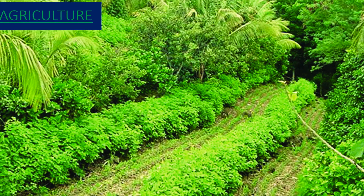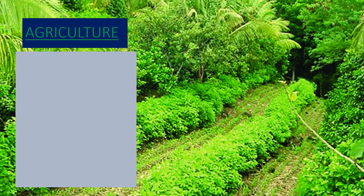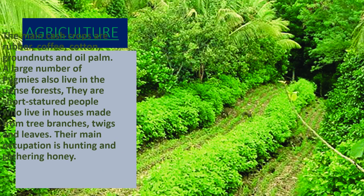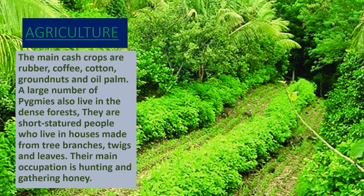Many parts of the forest have been cleared and the land is used for raising crops like rice, cotton, groundnut, coffee, rubber, cocoa, tobacco, and palm. Some agricultural products like cocoa, coffee, and palm oil are exported to other parts of the world.